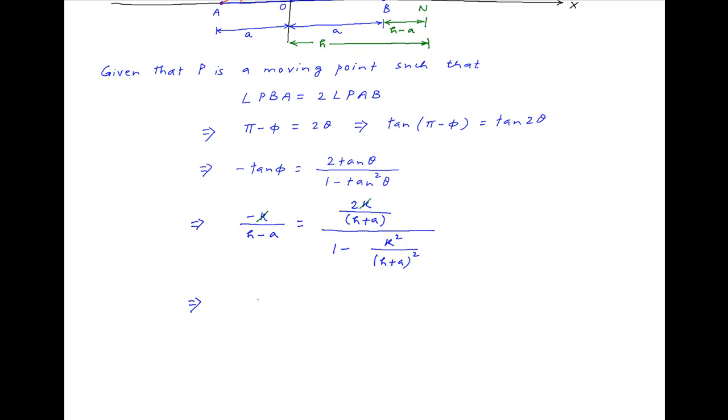k cancels across the left hand side and the right hand side in the numerator and we get minus 1 upon (h minus a) is equal to 2 upon (h plus a) multiplied by (h plus a) whole squared divided by (h plus a) whole squared minus k squared.